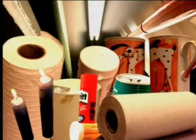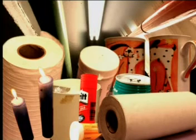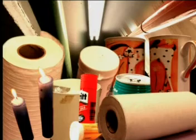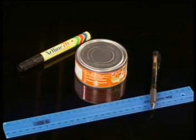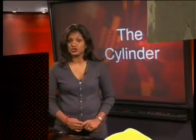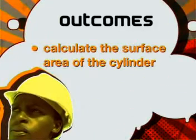We have looked at the surface area of some interesting right prisms so far. Today, there is another shape that I want to show you — it is the cylinder, a shape we see often in the world around us. In this lesson, you are going to need a can, a ruler, and a pen. By the end of this lesson, you should be able to calculate the surface area of the cylinder.